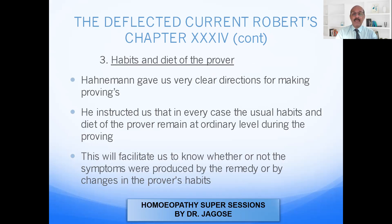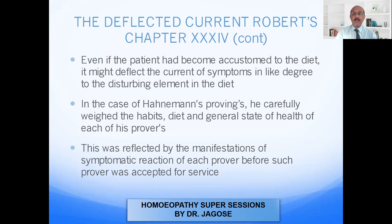The habits and diet of the prover. Hahnemann gave us very clear directions for making a proving. He instructed us that in every case the usual habits and diet of the prover remain at an ordinary level during the proving. When a prover is taken for drug proving, his case history is taken down — his aversions, his desires, etc. This will facilitate us to know whether or not the symptoms are produced by the remedy or by changes in the prover's habits. Even if the patient has become accustomed to the diet, it might deflect the current of symptoms to a light degree as a disturbing element.